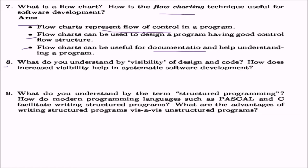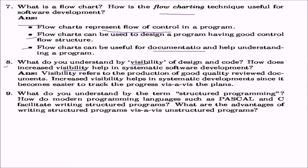Question eight asks about visibility of design in code and how increased visibility helps systematic software development. Visibility refers to the production of good quality review documents generated in each and every phase. If good quality review documents exist, we say the code or design has good visibility. Increased visibility helps in systematic development since it becomes easier to track progress and plans — a program manager, having greater visibility, can easily determine the status and progress of the project.